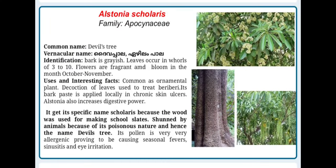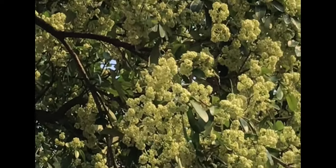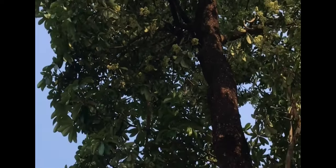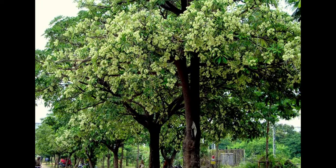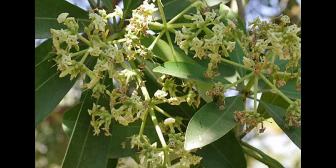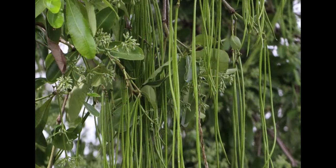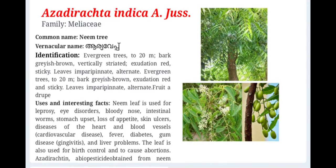Alstonia scholaris, family Apocynaceae. Common name is devil's tree and vernacular name is Devapala or Erilampala. The tree's bark is grayish, leaves occur in whorls, and flowers are fragrant. The decoction of leaves is used to treat beriberi. Alstonia also increases digestive power. Its pollen is very allergenic, causing seasonal fever, sinusitis and eye irritation.